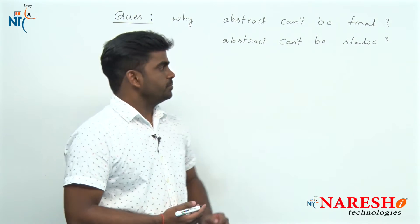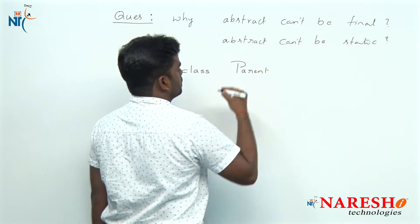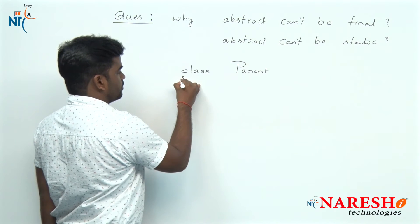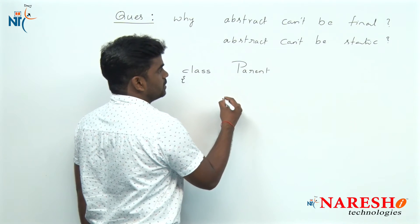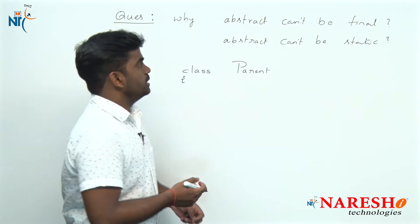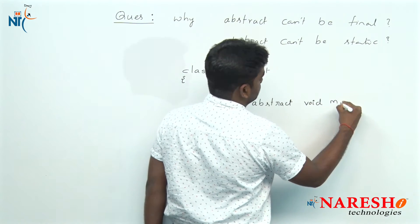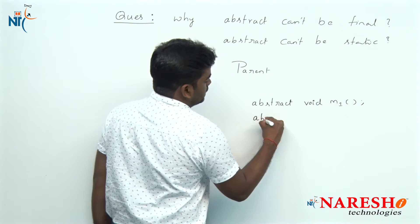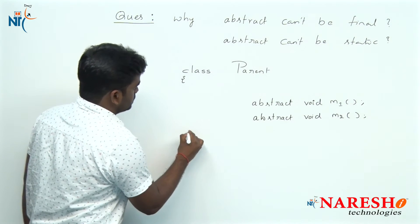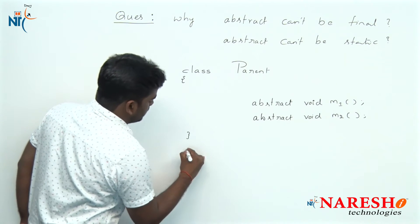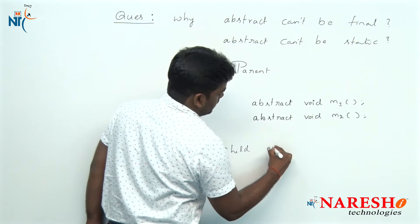The answer involves a parent-child relationship. We have a parent class, and inside that parent class we are declaring two abstract methods: abstract void m1 and abstract void m2. We also have a child class that extends the parent class.